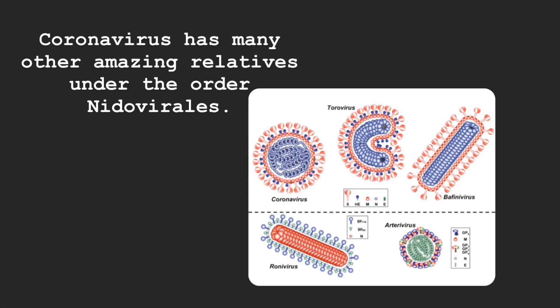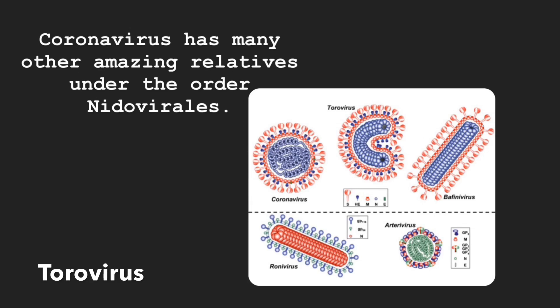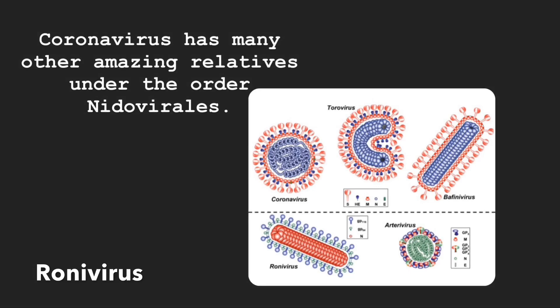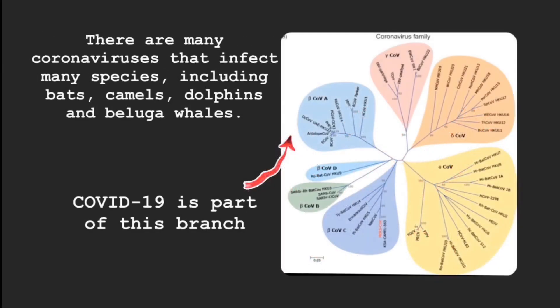Coronavirus has many amazing relatives under the order Nidoviralis. Torovirus infects vertebrates, especially cattle, pig, and horse, and is named after torus, which refers to its unusual C-shape unclosed circle. In contrast, Roni virus infects crustaceans such as shrimp. There are many coronaviruses and their relatives on the planet that infect many species, including bats, camels, dolphins, and even beluga whales. These viruses form phylogenetically distinct clusters, and COVID-19 is part of the beta coronavirus branch.